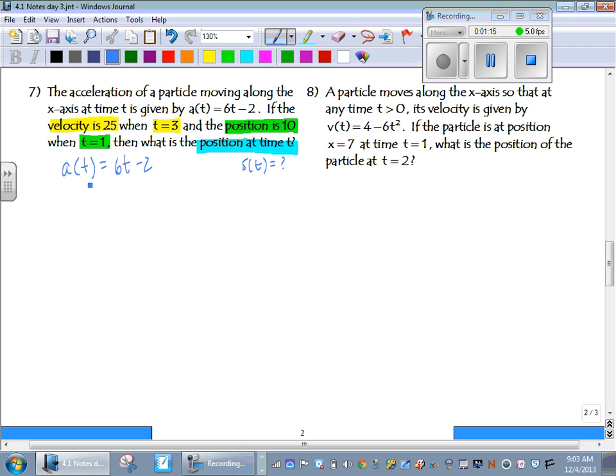So if we have acceleration, to get velocity, we can do the antiderivative. In this case, we're doing it in terms of t. So the antiderivative of acceleration is going to be velocity, because derivative of velocity is acceleration. We get 3t squared minus 2t plus c.